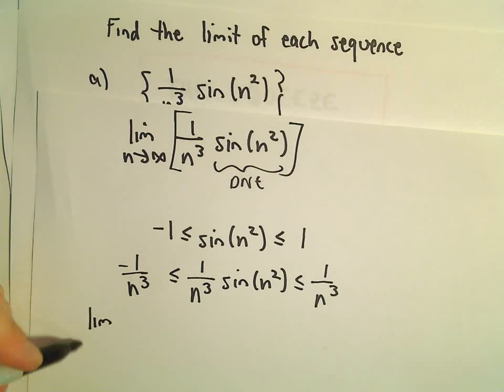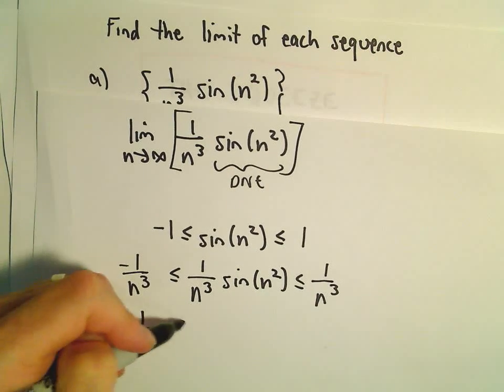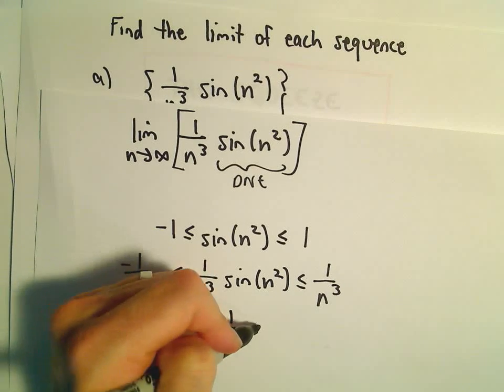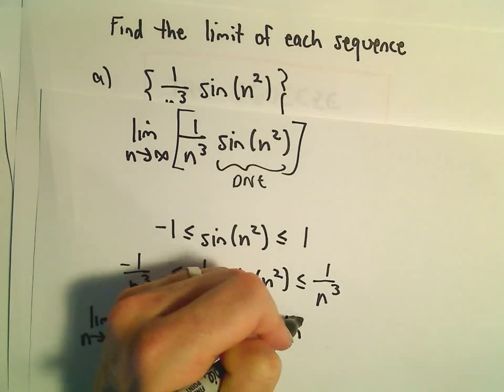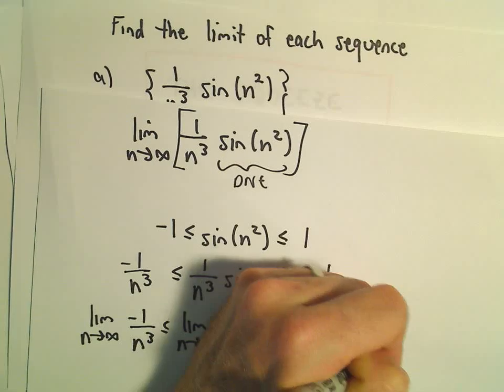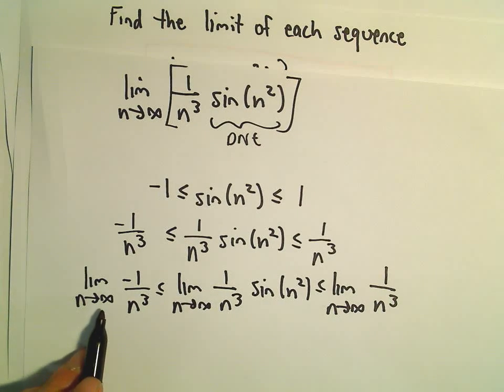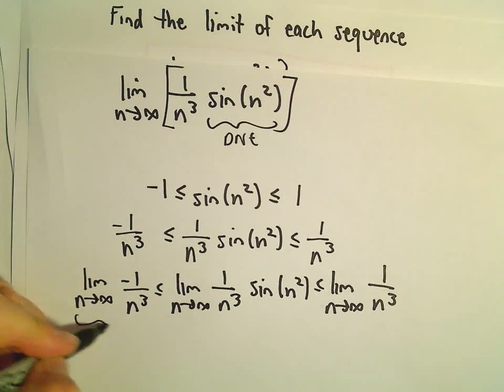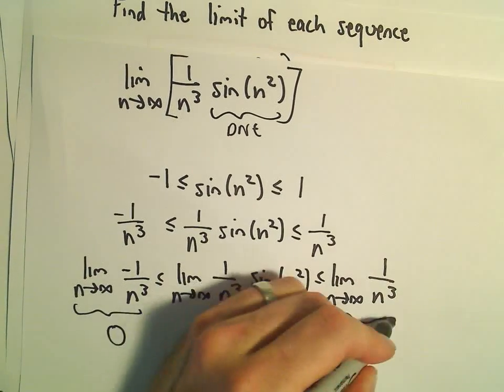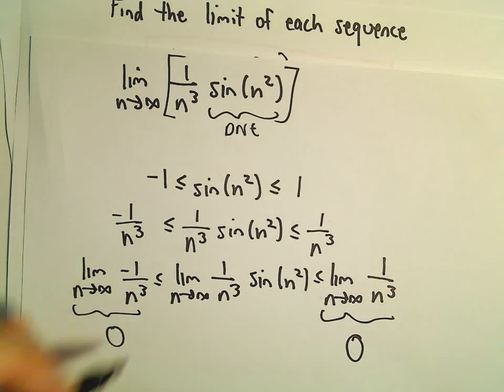If we take the limit as n goes to infinity of all of these, now we're using the squeeze theorem. The limit as n goes to infinity of negative 1 over n cubed is simply going to equal 0. Likewise, the limit as n goes to infinity of positive 1 over n cubed is going to equal 0.